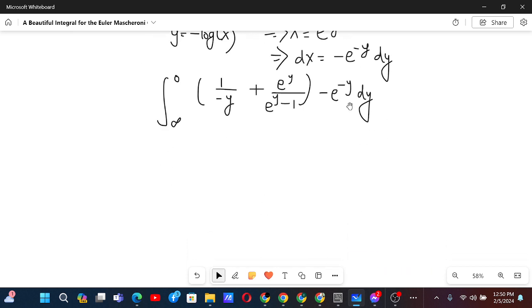Now after this you can use the negative sign to reflect the integral. That gives us integral from 0 to infinity. And now multiply by e to the power minus y. We will have 1 by e to the power y minus 1 minus e to the power minus y, y to the power minus 1 dy.